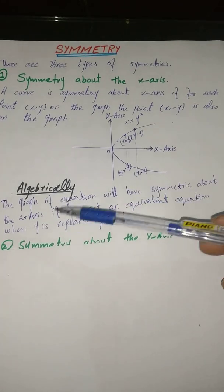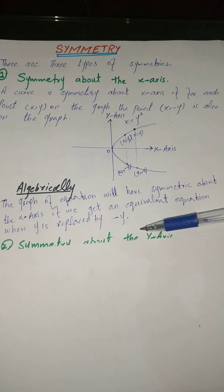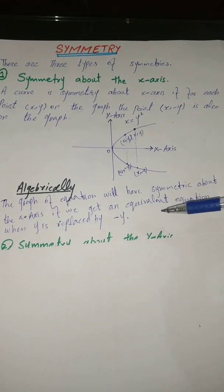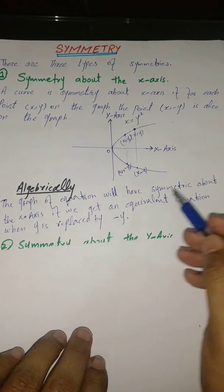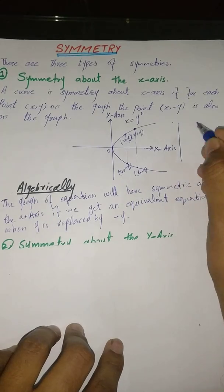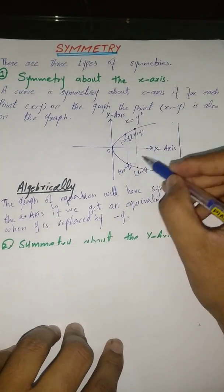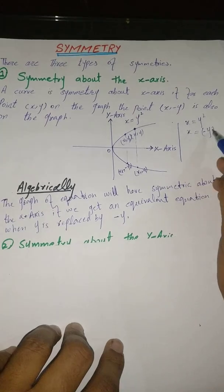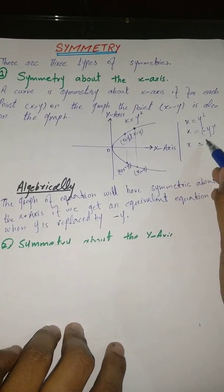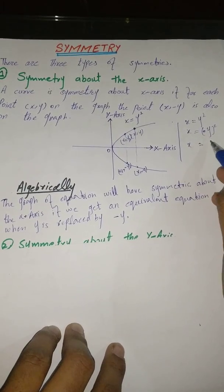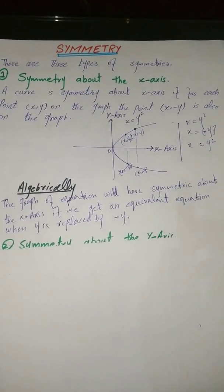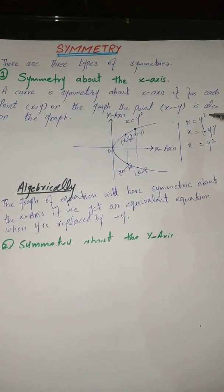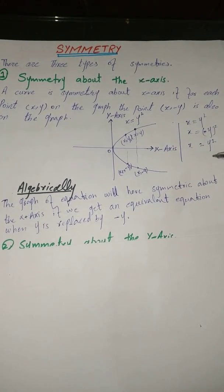For example, consider y² = x. Whenever we replace y by −y, it gives us (−y)² = x, which is still y² = x — the same equivalent equation. Because of the square, the minus becomes positive. So we say that after replacing y by −y we get an equivalent equation, and therefore this equation is symmetric about the x-axis.